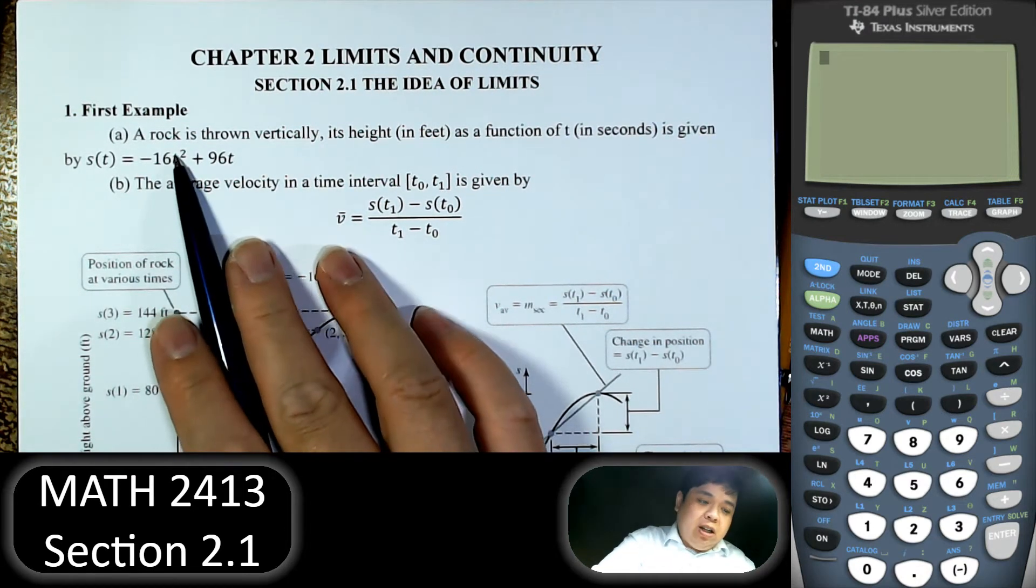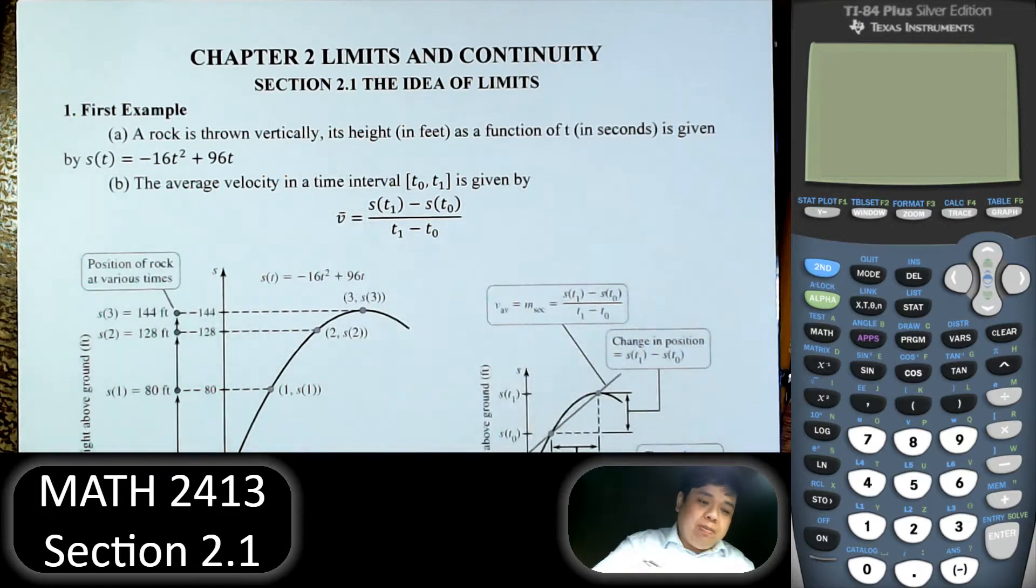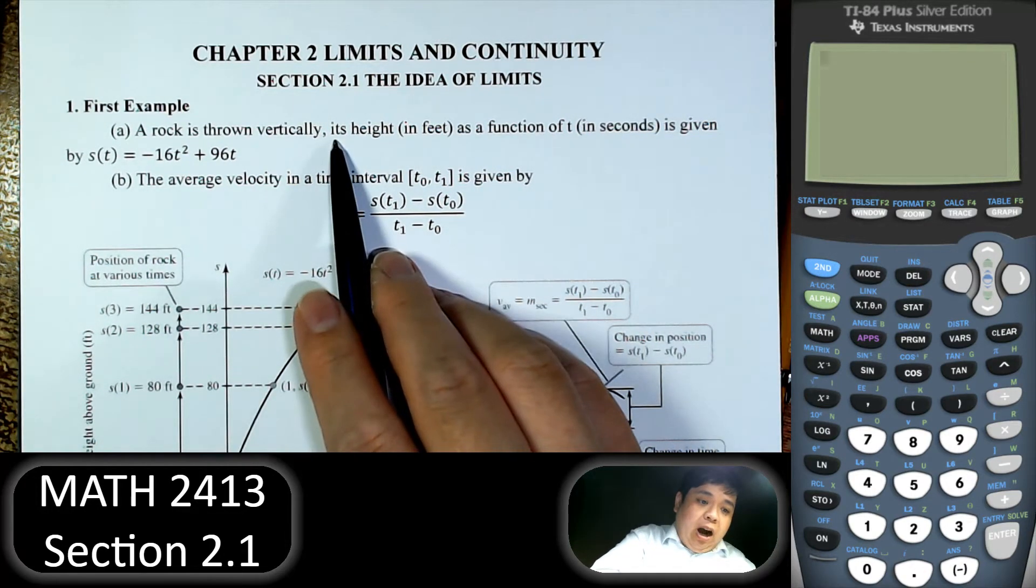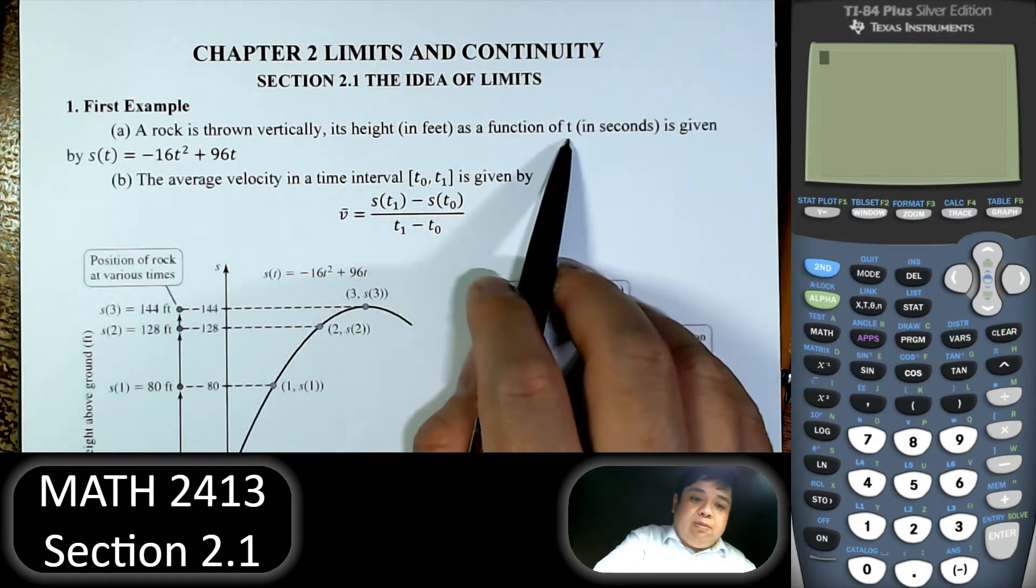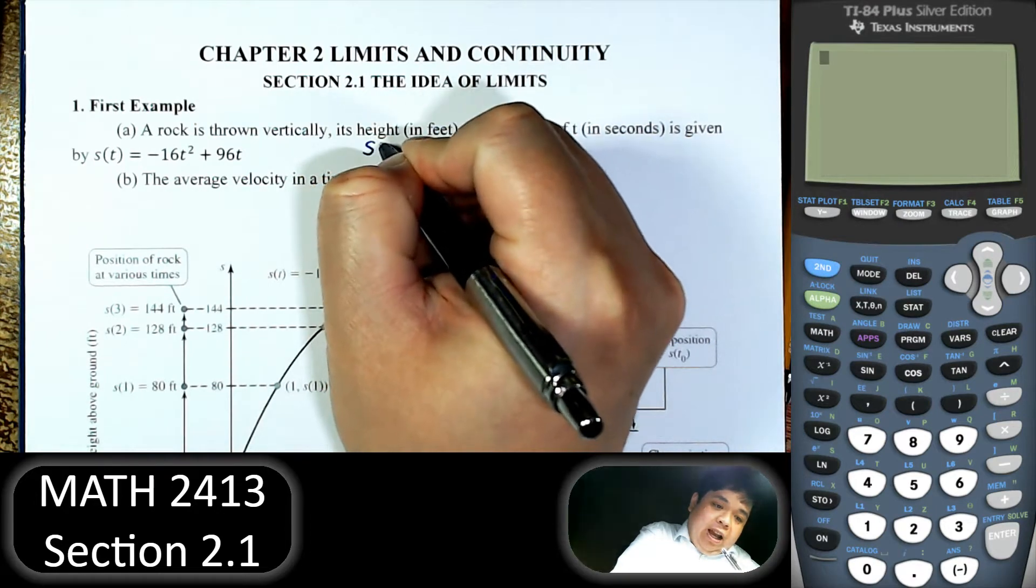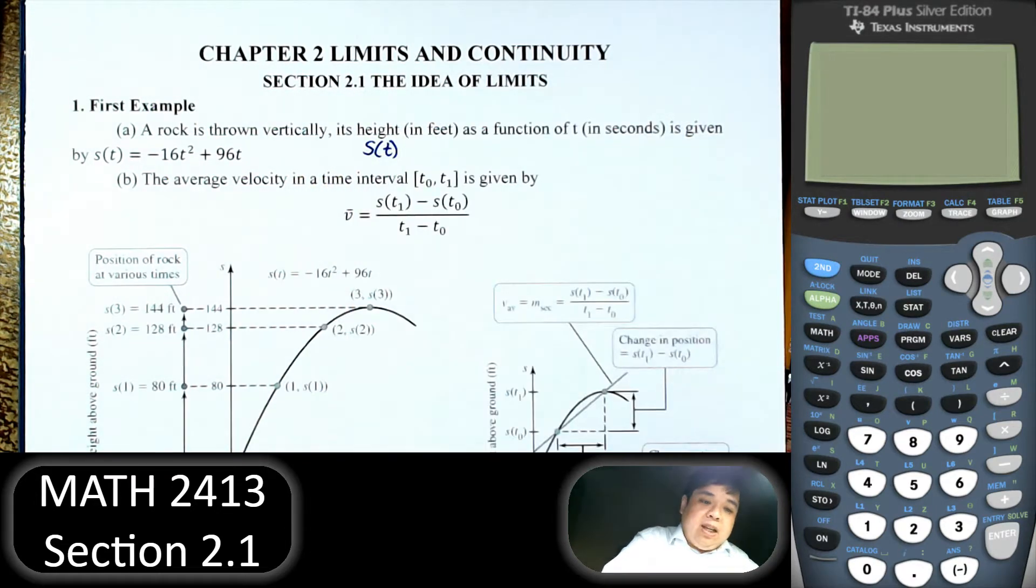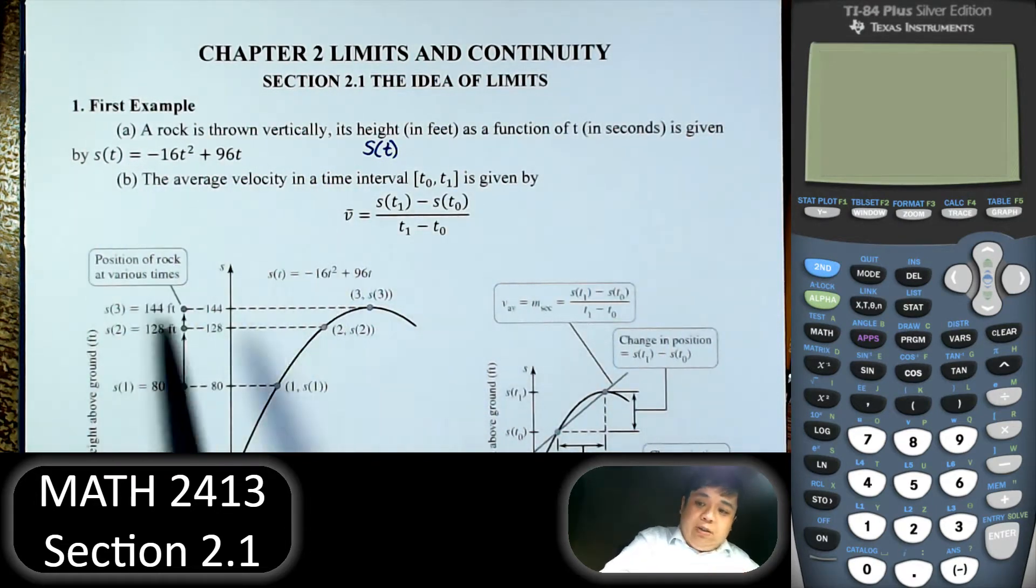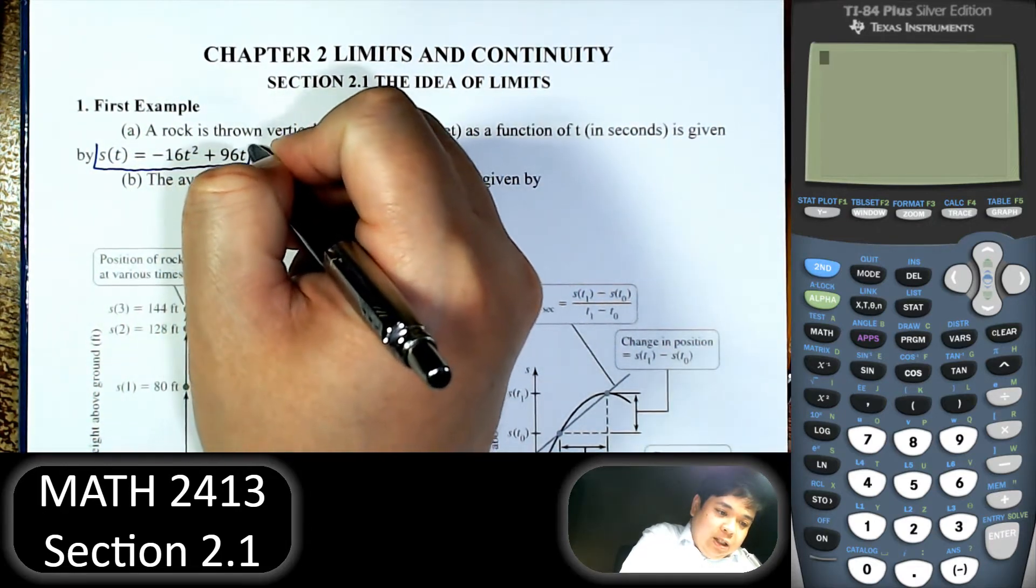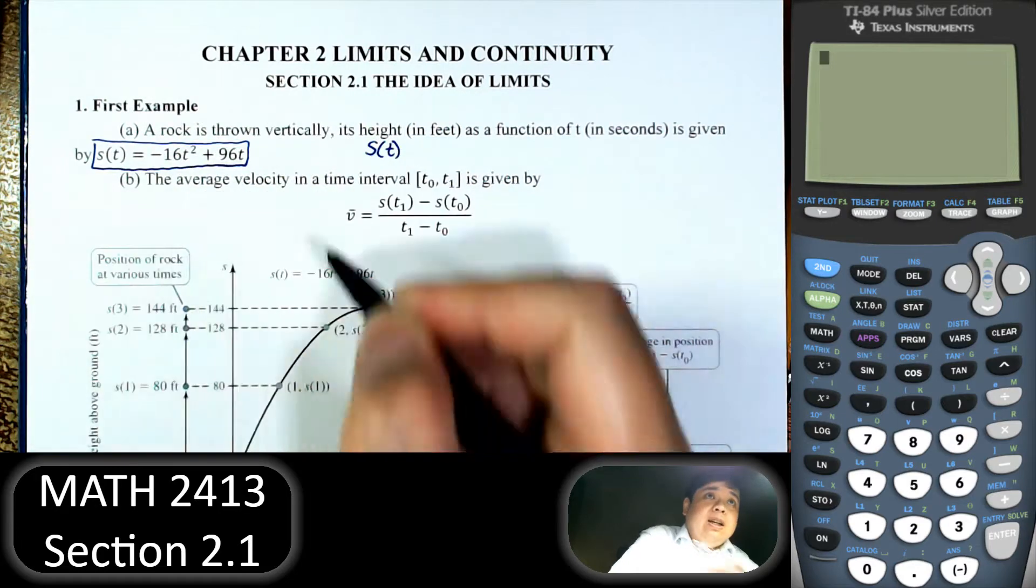So we have a rock that is thrown vertically, so straight up. The height is a function of t. The height is given by s as a function of t, and that is the height. And the function of t is that function.